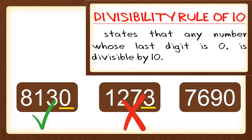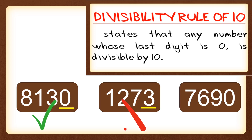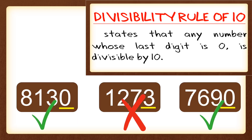And last is 7,690. Just look at the last digit — if it is 0, it is divisible by 10; if it is not, it is not divisible by 10. The last digit of 7,690 is 0, so 7,690 is divisible by 10.